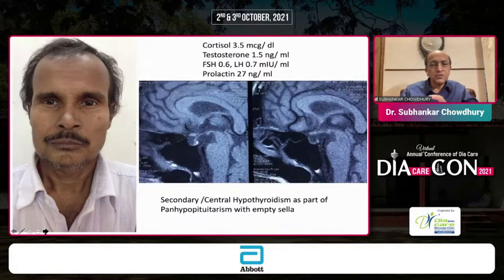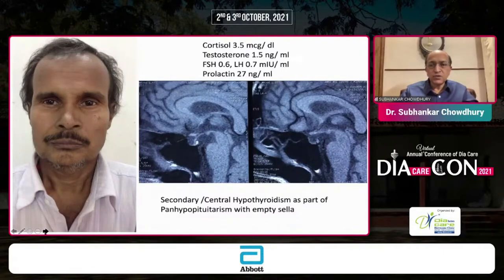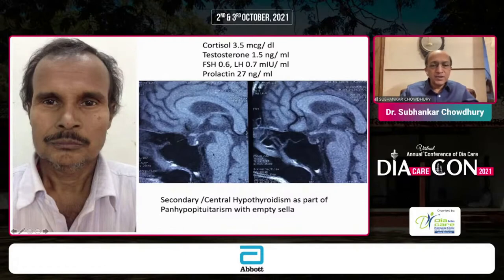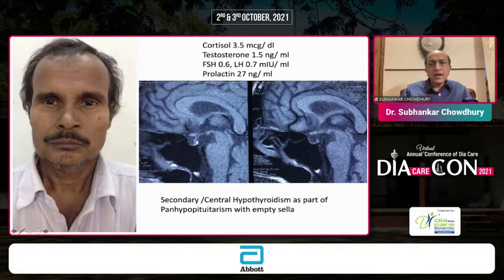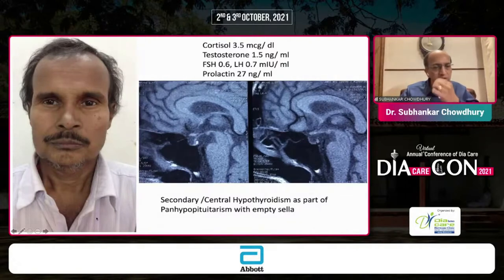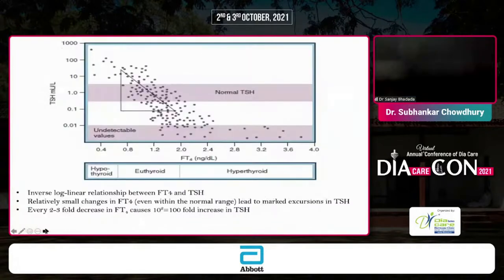Typically, if you diagnose hypothyroidism with a low T4 and raised TSH, by the time the T4 goes below the normal range, the TSH is usually way, way high. This gives us a clue to the possibility of central hypothyroidism. This gentleman actually had pan-hypopituitarism — all other pituitary hormones were low except prolactin, and on MRI he had an empty sella. The learning point is: if you have clearly low T4 but TSH is within normal range or mildly elevated, please check cortisol level before instituting thyroxine, because otherwise you may precipitate an adrenal crisis — exactly what happened with this gentleman.